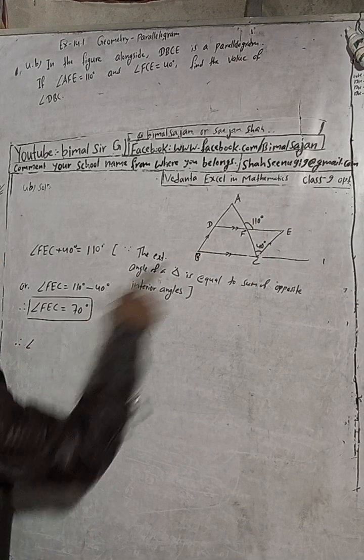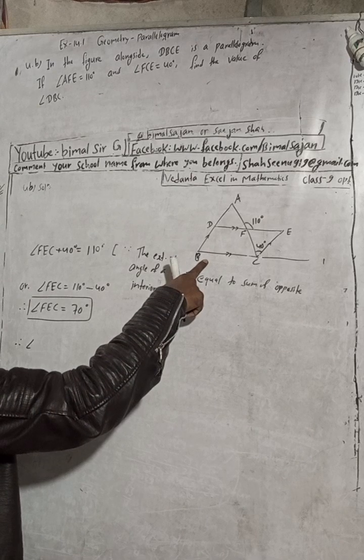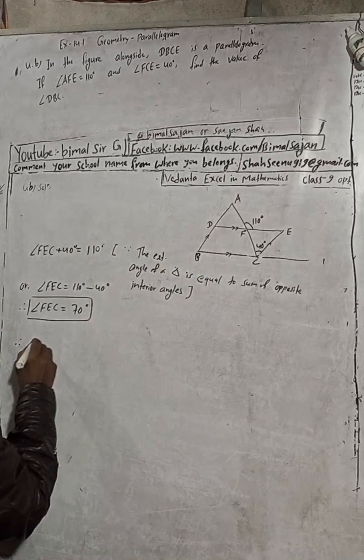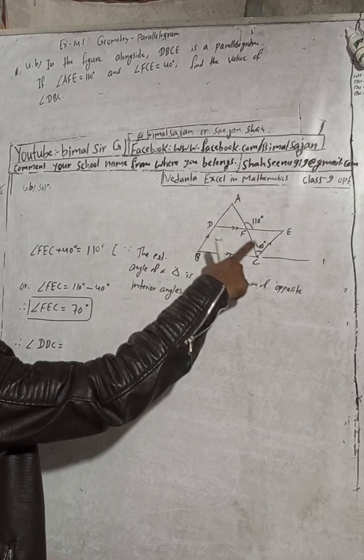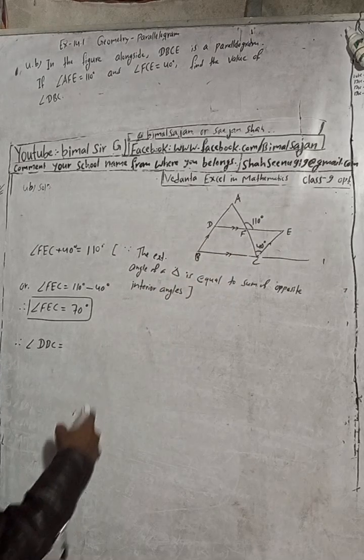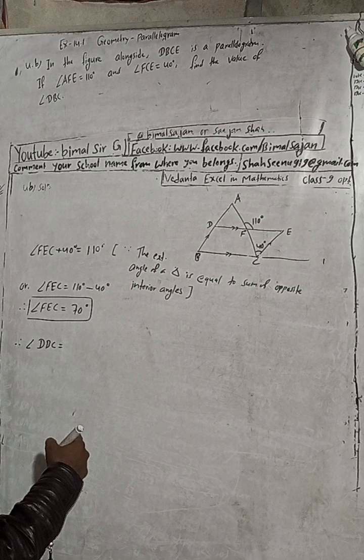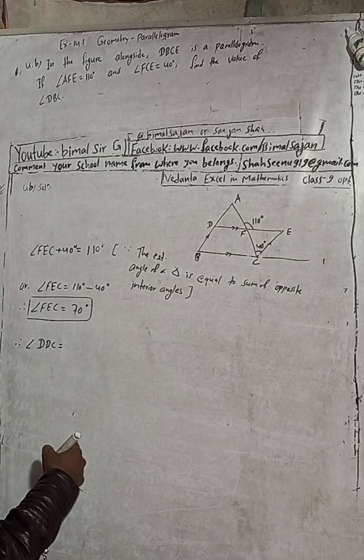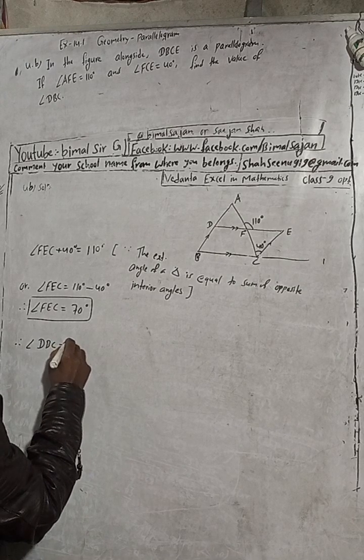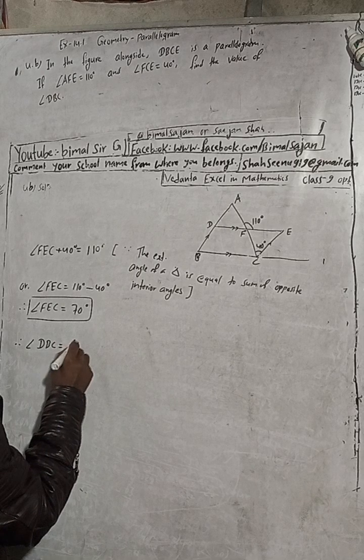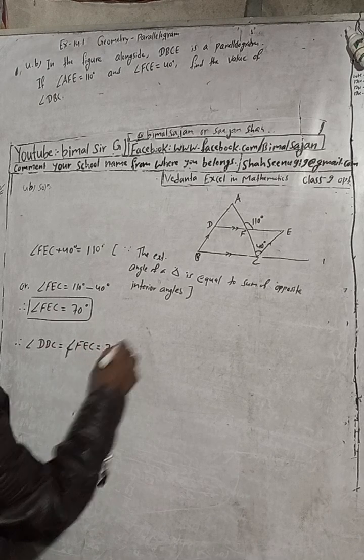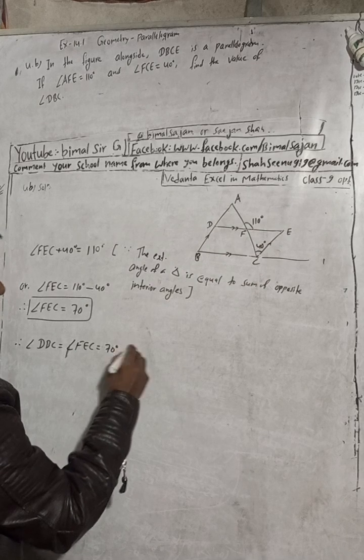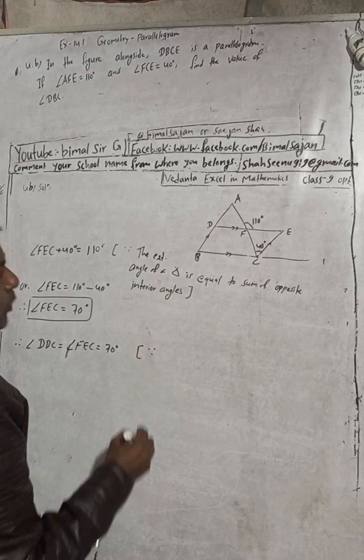Therefore, angle DBC is equal to angle FEC, which is equal to 70 degrees.